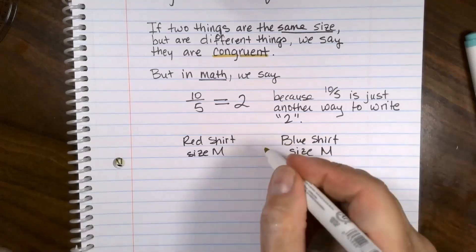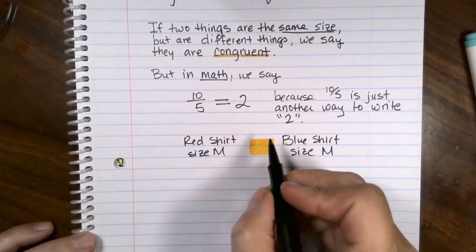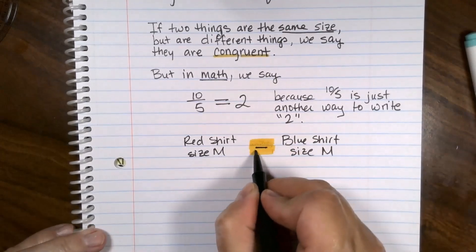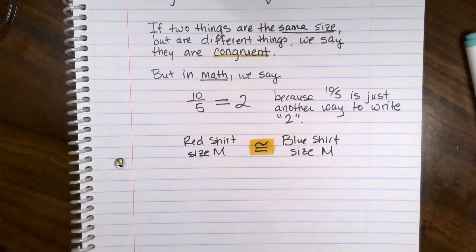So the symbol we use for that starts out as an equal sign, but it has this little squiggly on the top. It's kind of like a sideways S. This is the congruent symbol. They're two separate things, but they are the same size.